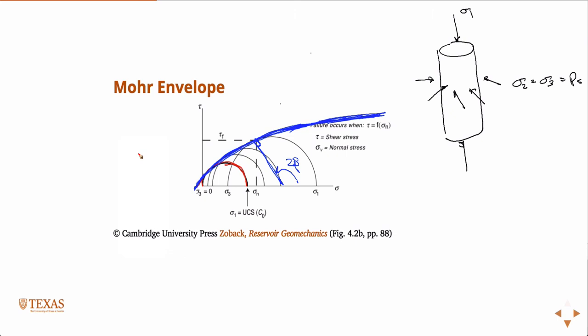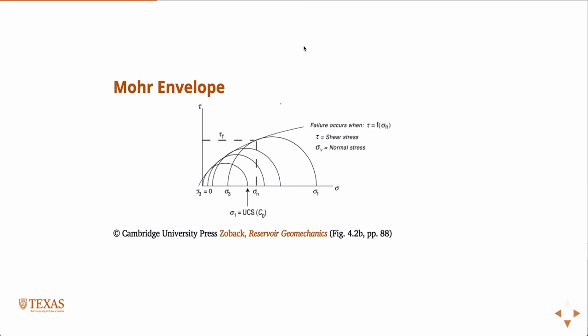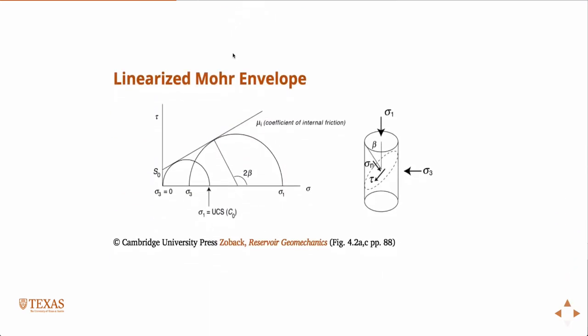One thing we can do is, as a simplified model, we can just fit a linear line — the best fit — that fits the data. And if we do that, then what we get is called the linearized Mohr envelope.